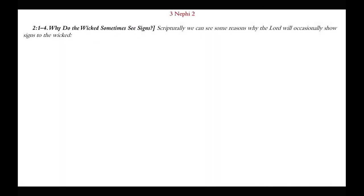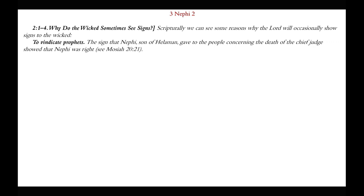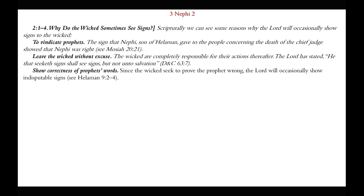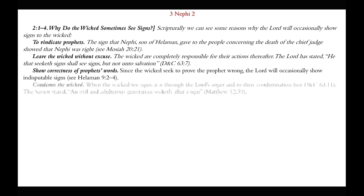Why do the wicked sometimes see signs? Scripturally, we can see some reasons why the Lord would occasionally show signs to the wicked. Number 1: to vindicate prophets — the sign that Nephi, son of Helaman, gave concerning the death of the chief judge showed that Nephi was right. Number 2: to leave the wicked without excuse — the wicked are completely responsible for their actions, and the Lord has stated, 'He that seeks a sign shall see signs but not unto salvation.' Number 3: to show the correctness of the prophets' words — since the wicked seek to prove the prophets wrong, the Lord will occasionally show indisputable signs. Number 4: to condemn the wicked — when the wicked see signs it is through the Lord's anger and to their condemnation. The Savior stated, 'An evil and adulterous generation seeketh after a sign.'